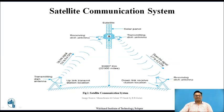This is the satellite communication system, which generally consists of a satellite. There are two antennas at the Earth station — a transmitting antenna and a receiving antenna. The transmitting antenna transmits the information towards the satellite, and then the satellite processes this information and resends it to the receiving antenna at the Earth station.